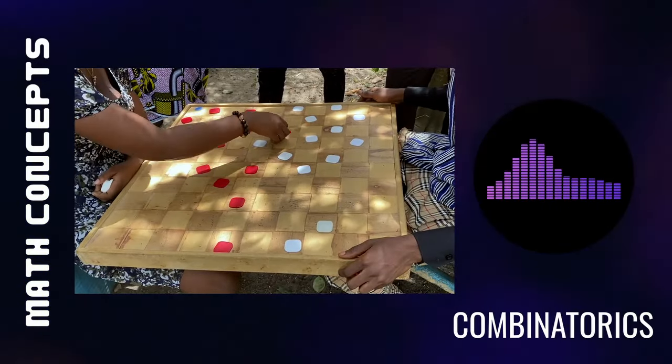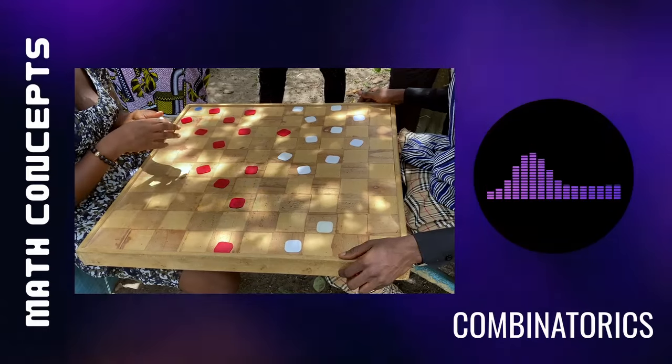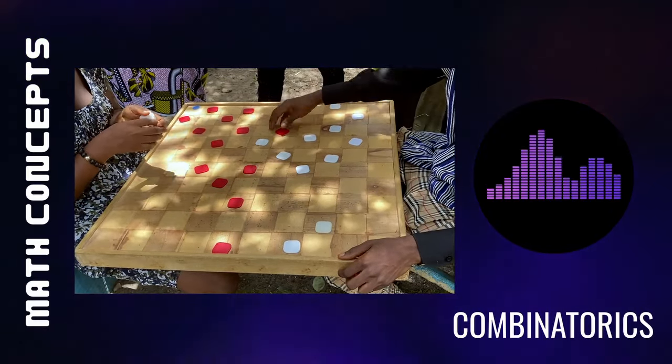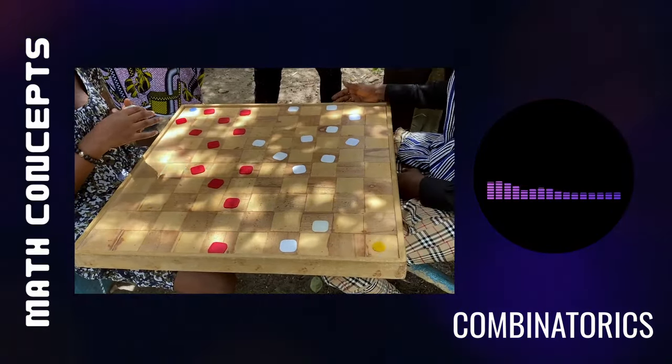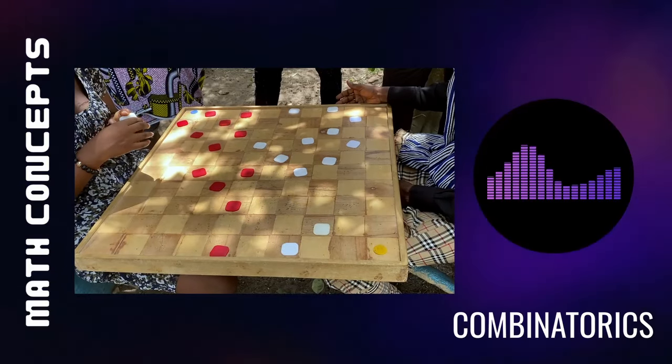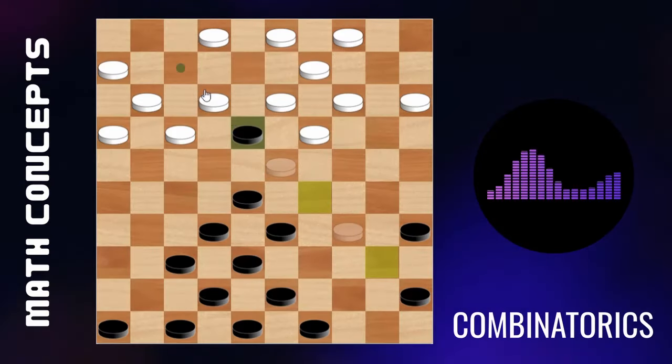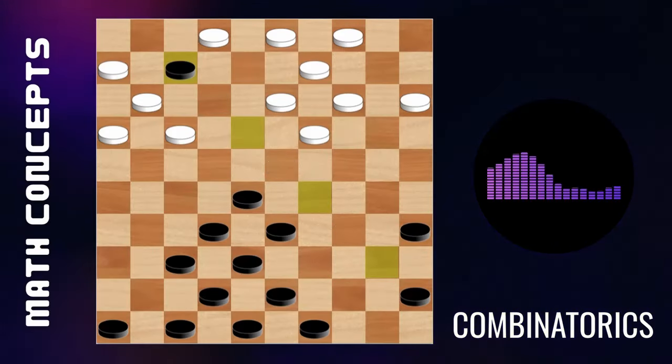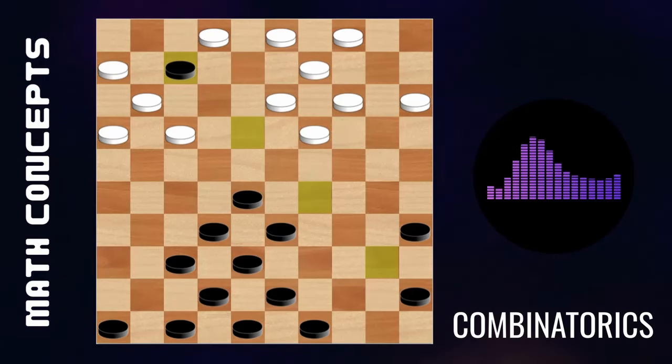Combinatorics: Combinatorics is the branch of mathematics that deals with counting the number of possible outcomes in a given situation and can be applied to strategic planning in the game of drafts. There are a finite number of possible moves in drafts, and each move can lead to a different set of outcomes.